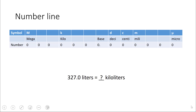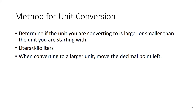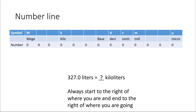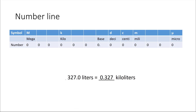Now consider a different conversion: starting with 327 liters, how many kiloliters is that? We determine that kiloliters are larger than liters, so we're converting to a larger unit — meaning we move the decimal point to the left. On the number line, moving from base to kilo takes one, two, three spaces to the left. Moving the decimal point three places left gives us 0.327 kiloliters. So 327 liters equals 0.327 kiloliters.